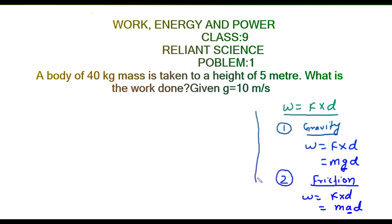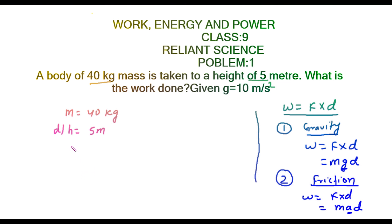Problem 1: A body of 40 kg mass is taken to a height of 5 meters. What is the work done? g is given as 10 m/s². Writing the given: mass = 40 kg, height (distance) = 5 m. Since the body is lifted to a height, this is a case of work done against gravity.